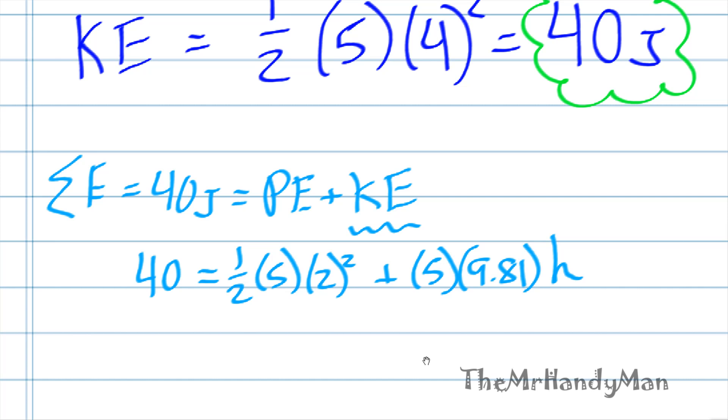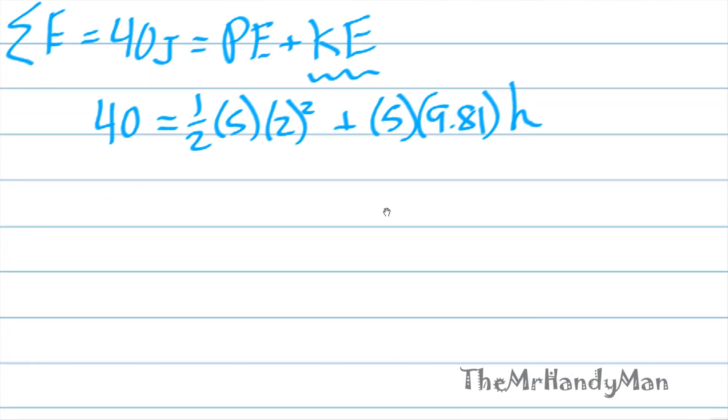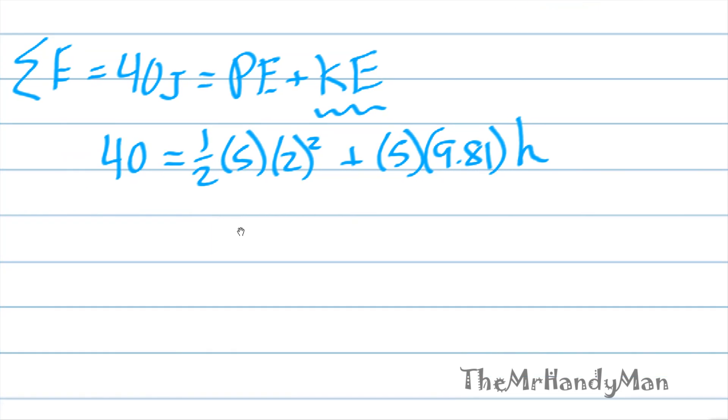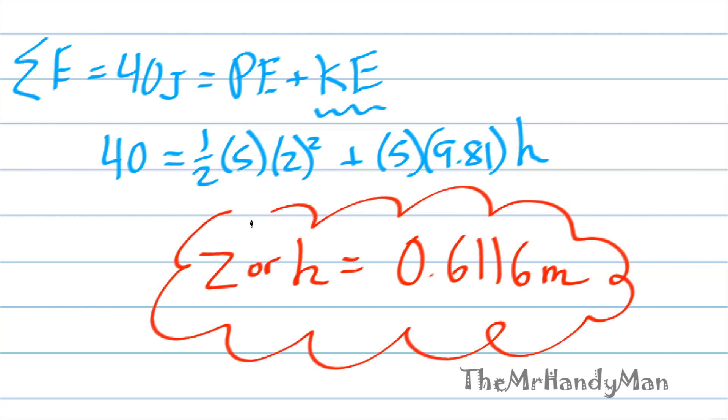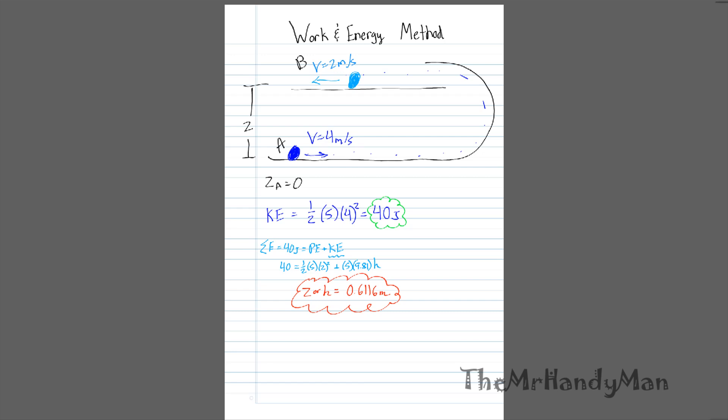But anyway, when you solve this out, H or Z, I'll just say Z, Z or H is equal to 0.6116 meters. Way more significant figures than we needed, but I'm just pointing out how quickly it was to solve, how little work it was to solve for this correlation between velocities and displacement, linear displacement.